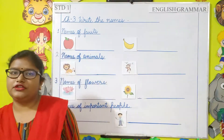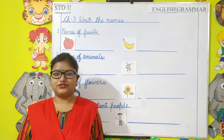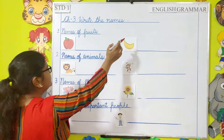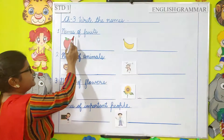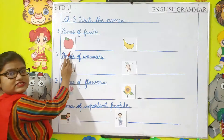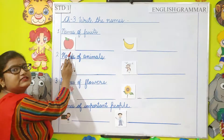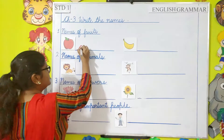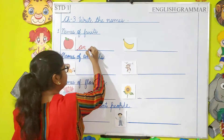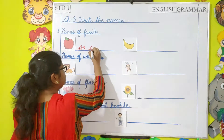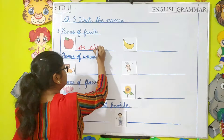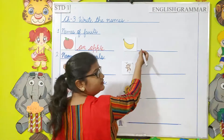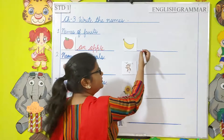Moving on to our first topic, chapter 3: write the names. Names of fruits. Which fruit is this? This is an apple, so here we will write an apple. This one: a banana.